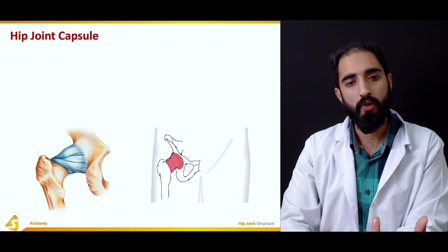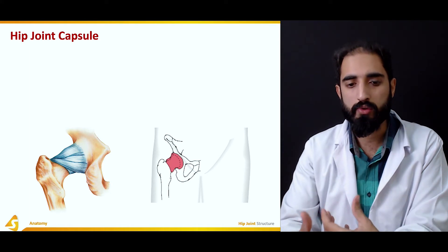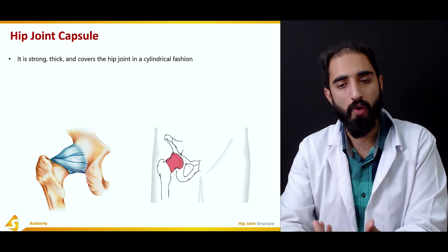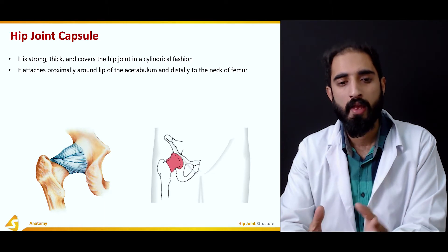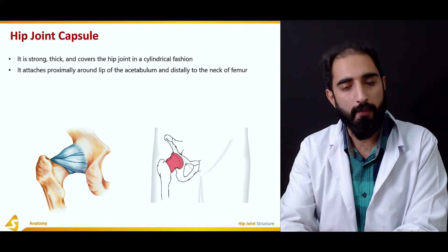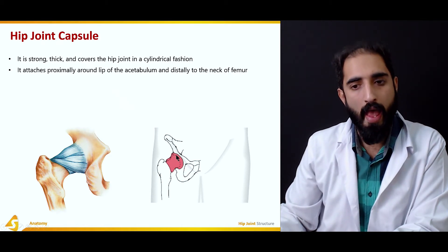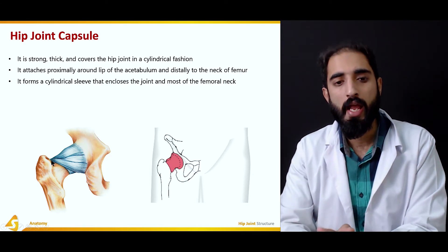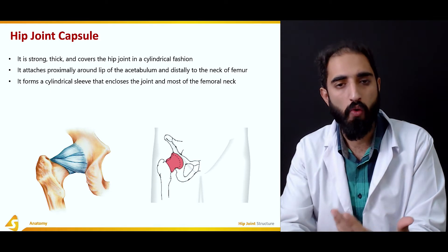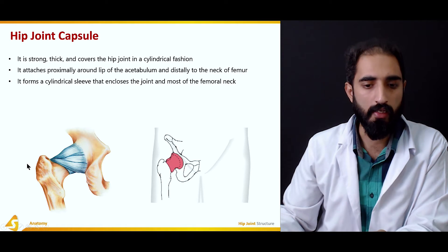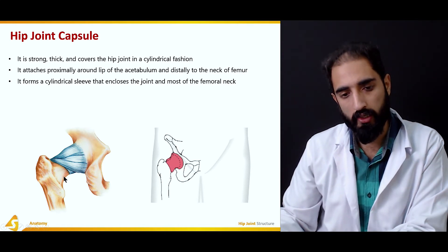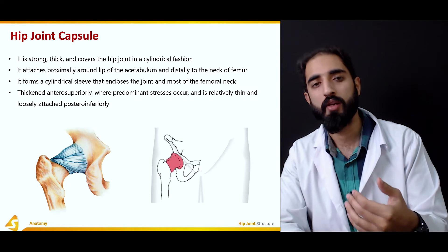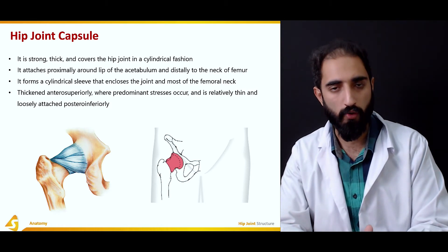Another important structure is the hip joint capsule, which is like a sleeve surrounding the hip joint. It is very strong and thick and covers the hip joint in a cylindrical fashion, providing protection and stability. It attaches proximally just around the lip of the acetabulum and distally to the neck of the femur, forming a cylindrical sleeve that includes the joint and most of the femoral neck, though some portions are deficient. It is thickened anterosuperiorly where predominant stresses occur and is relatively thin and loosely attached posteroinferiorly.